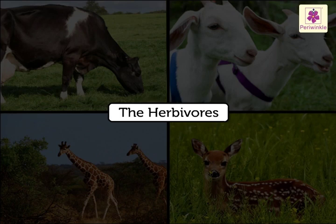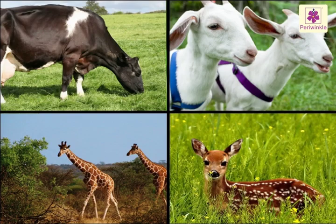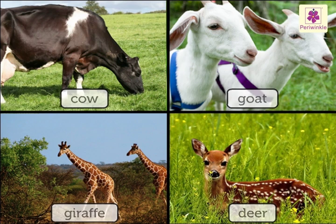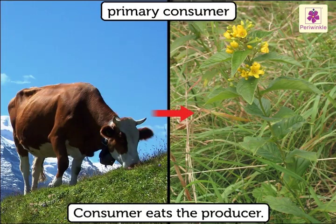The herbivores, or primary consumers — like the cow, goat, deer, and giraffe — directly depend on plants for their food. The consumer eats the producer.